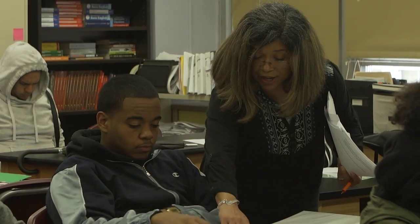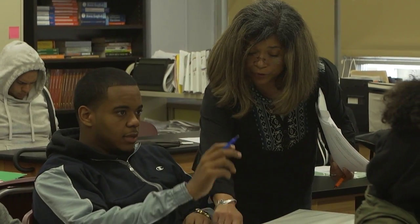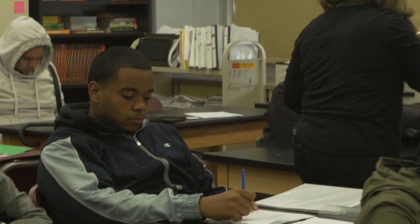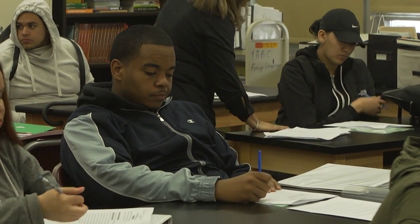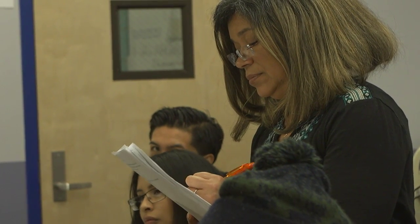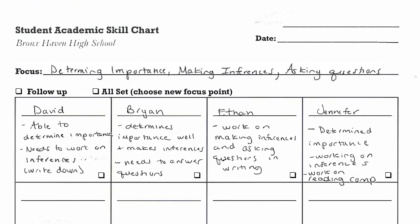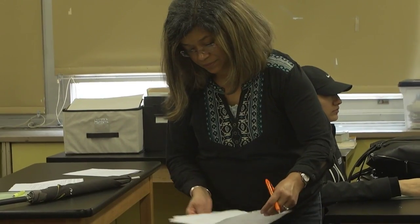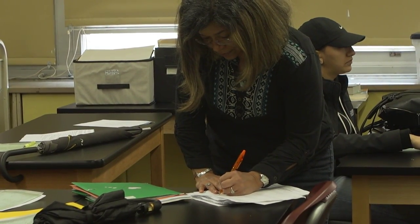I use the conference form in class with my students when they're doing independent work. I go to each student one by one and ask them a question related to the skill that they are learning. I take notes on what they say to see if they've really mastered the skill, and then at the end of the day, when I'm doing my lesson plan, I look at it and it informs my practice — letting me know if students got the lesson or if they need more review.